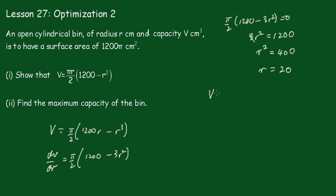So we can see that V is equal to π upon 2 times 1200 times 20 minus 20 cubed. We'll take out one of those 20s, so that 20 comes out and becomes 10π. And instead of 1200, 20 squared is 400, so it becomes 800, and 800 times 10 is 8,000. So that's 8,000π centimeters cubed is the maximum capacity of the bin.